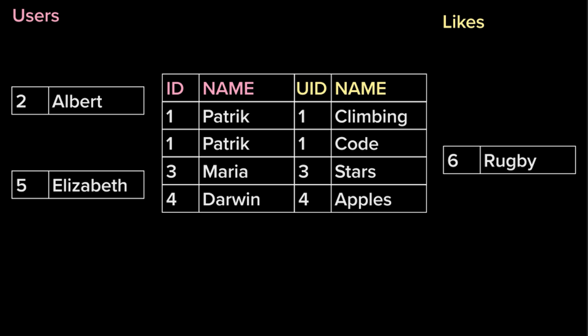But what if you want to keep them - Albert, Elizabeth, and rugby - even if there are no matches? One reason you would want to keep them is if you want to count how many things these users like. For example, Patrick likes climbing and coding - that's two things. Maria likes stars, that's one thing. Darwin likes apples, also one thing. Albert likes zero things, Elizabeth also likes zero things, and I want that on my table.